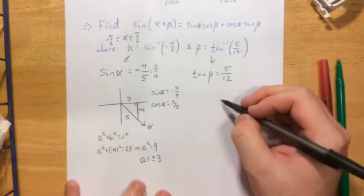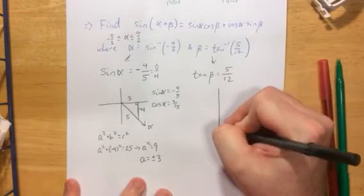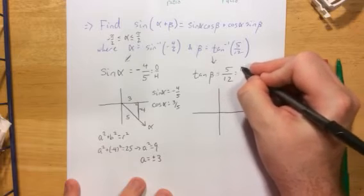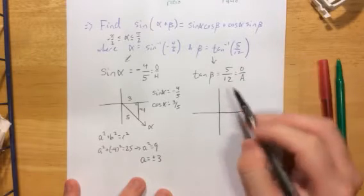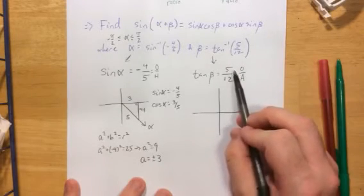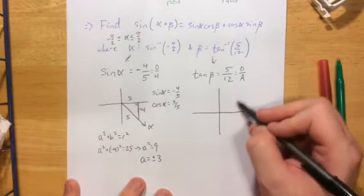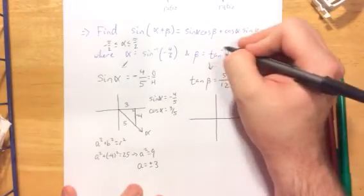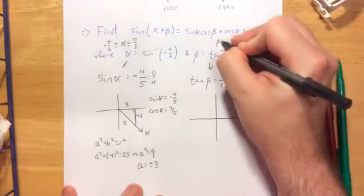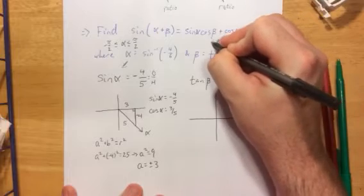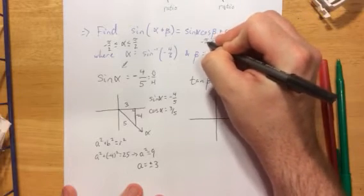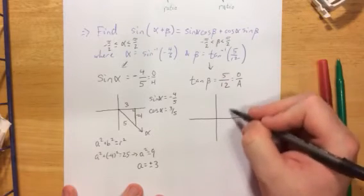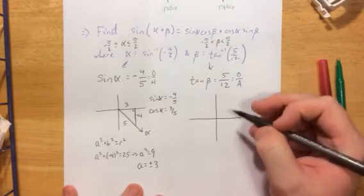I'm going to do the same thing for beta. Now for beta, we were given that the tangent of beta is equal to 5 twelfths. Now the fact that the ratio is positive means that for the tangent we would normally be restricted to quadrant 1 and quadrant 3. But the angle restriction on beta, given that we have an inverse tangent function, is that beta has to be in between negative pi over 2 and positive pi over 2. As a result, we sometimes say that beta is restricted to quadrants 1 and 4, just like for the sine.